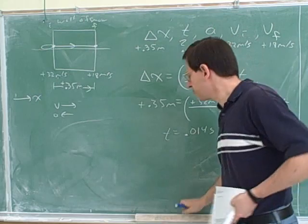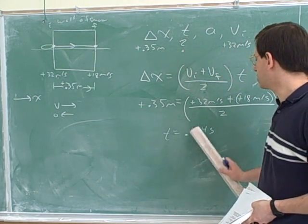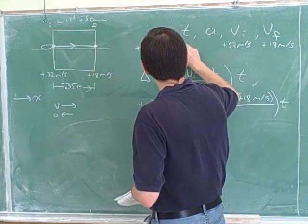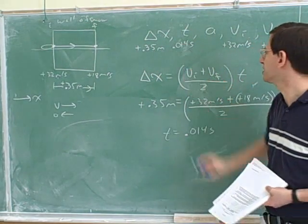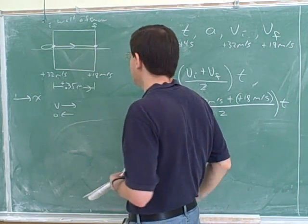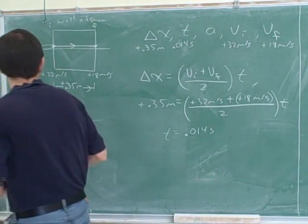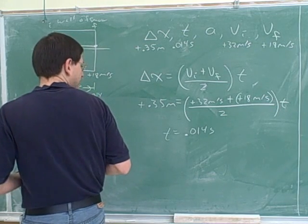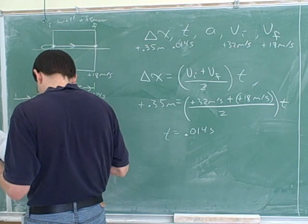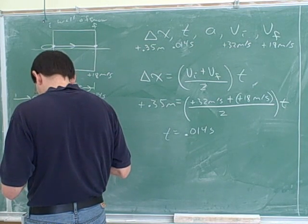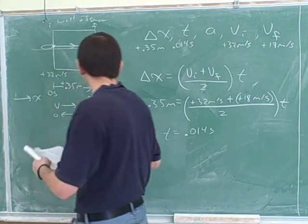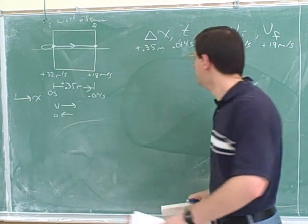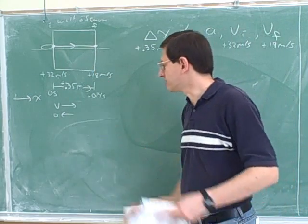So what do we need to do here? Well, the first thing I should have probably done was, before I even went on to part B, I should have built this into my overall framework. Now we know what this time is. So I'm going to go ahead and put this up here, 0.014 seconds. Times are always positive, so I won't bother putting in a sign on that. And maybe I should even build that in my sketch. So this was where we were at at time 0 seconds, and this is where we're at at time 0.014 seconds. So build the new information into our five variables and into your sketch.